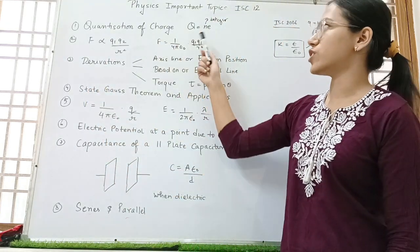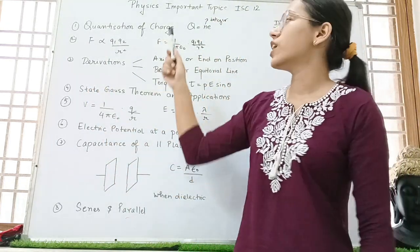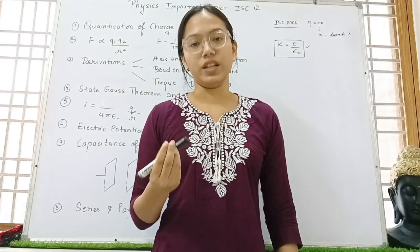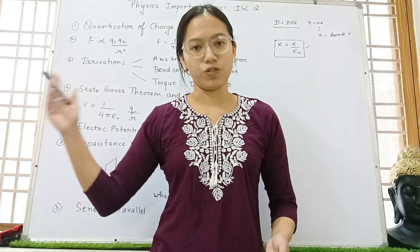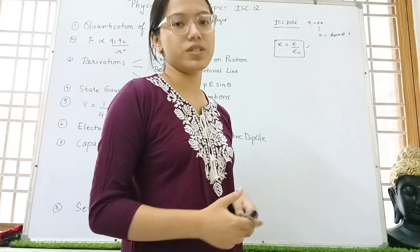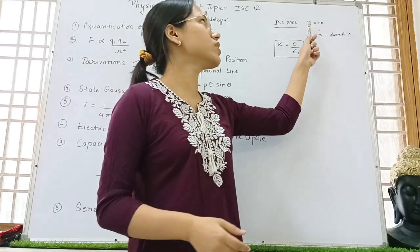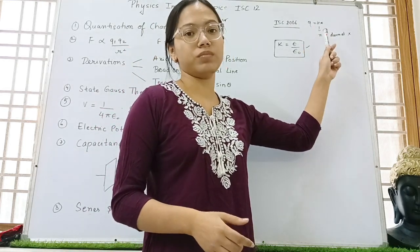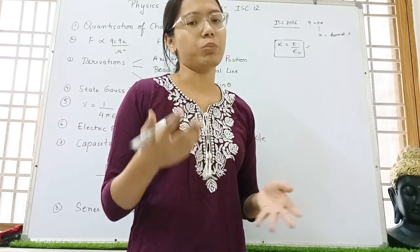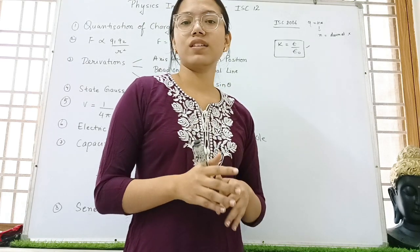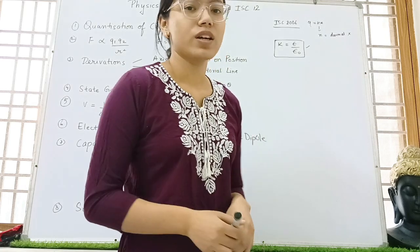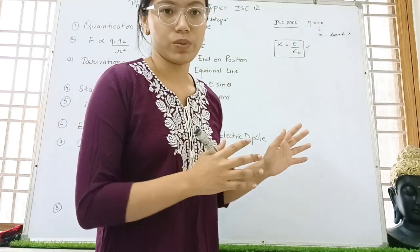The first one is quantization of charge. So here the formula is Q is equal to N E. Now N should come in integers as the answer like 1, 2, 3, 4, 5. Because whenever a question is asked, like this was asked in ISC 2006, the question was find out the N. And the answer was in decimal like 0.8 or 1.34. Whenever your answer is in decimals or in fractions, then it's not possible. So here it could not be possible. That was the question.